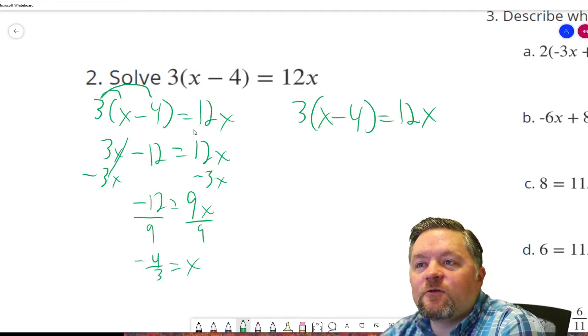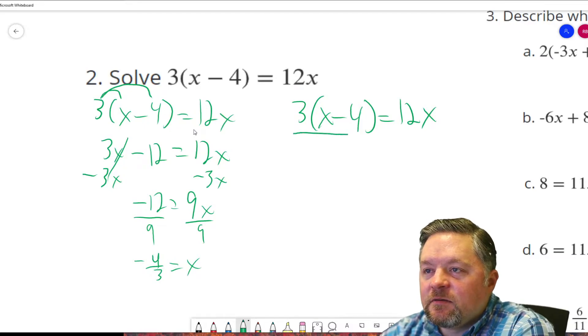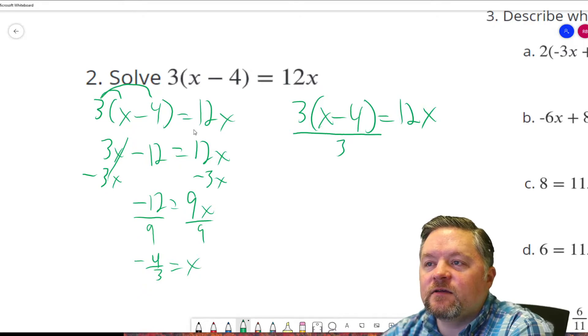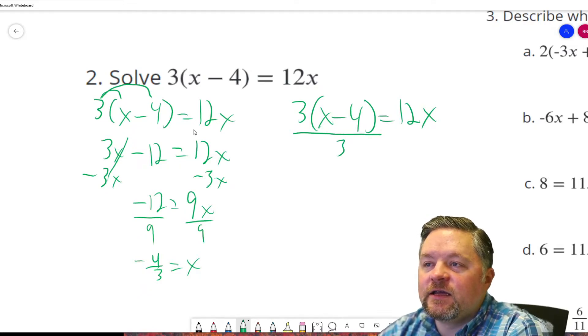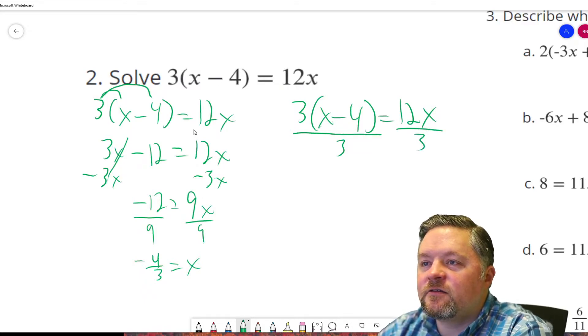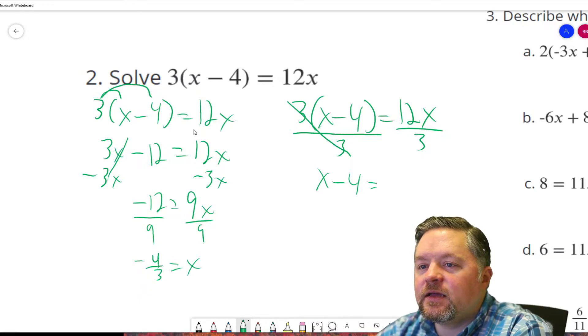If we look at it the other way, we could get rid of what's inside those parentheses by dividing that whole side of the equation by 3. Because right now the whole side of the equation is being multiplied by 3. If we also divide by 3, that'll cancel. Do it to one side, do it to the other. Those cancel. x minus 4 equals 12x divided by 3 is 4x.